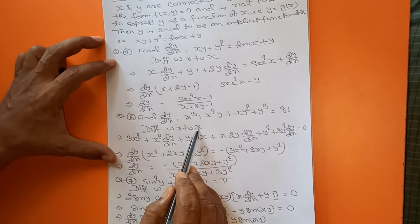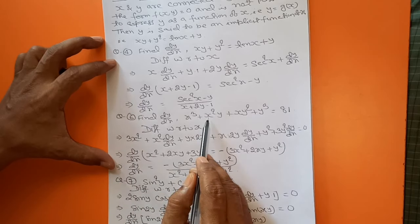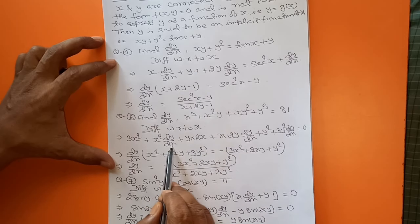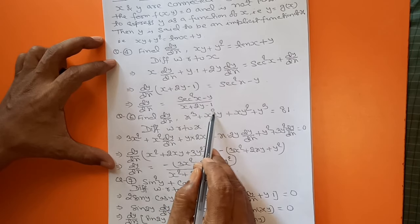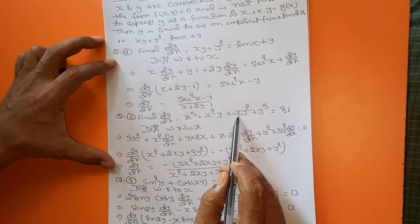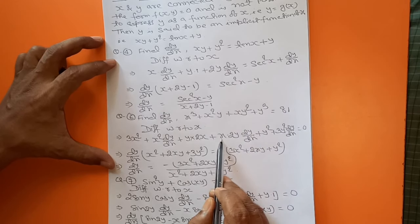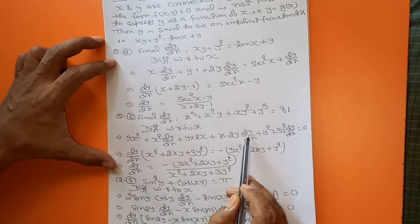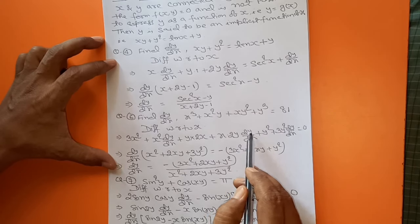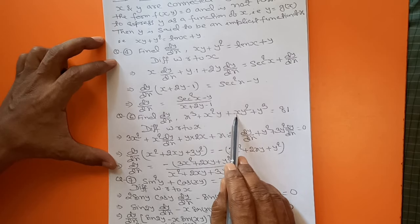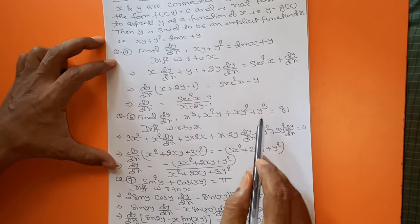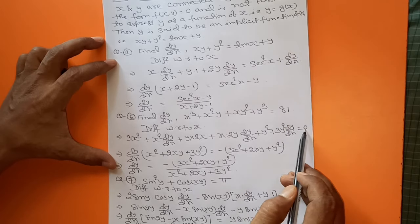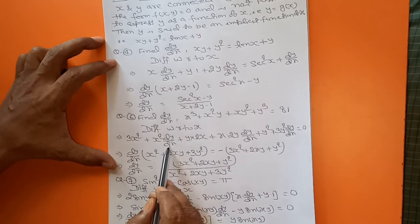Differentiate with respect to x. For x³, write 3x². For x²y, it has two functions: first function x², differentiation of y is dy/dx, plus second function y, differentiation of x² is 2x. For xy², also two functions: first function x, differentiation of y² is 2y · dy/dx, plus second function y², differentiation of x is 1, so write y². For y³: 3y² · dy/dx. Differentiation of constant 81 is 0.